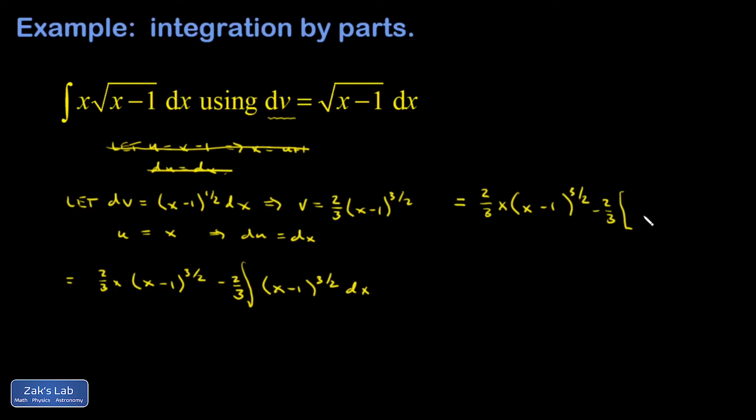Divided by 5/2, which is the same as multiplying by 2/5, and then I have a plus c. Cleaning it up just a little bit, that's 4/15 out in front of that second term.